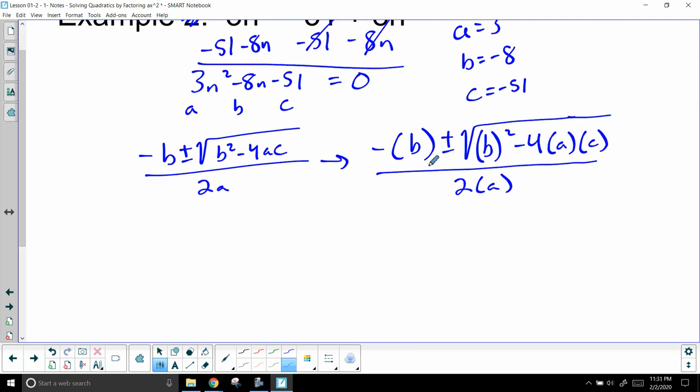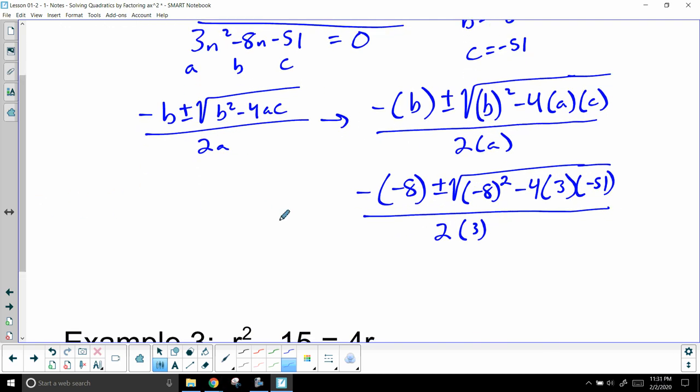So whichever way you want to go you pick, I'm just going to continue plugging stuff in. So negative parentheses negative 8 plus minus root parentheses negative 8 again squared minus 4 parentheses 3 parentheses negative 51 all over 2 times parentheses 3. Now at this point you could just plug all of this in the calculator and you'll get your answer, provided you just put a plus here where the plus minus is and then go back and switch it to a minus.